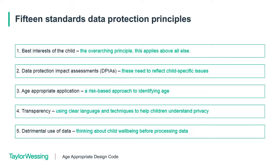Transparency is always the core GDPR fundamental value and sits as our fourth standard. The takeaways are that clear language and in many cases more visual techniques are essential to help children understand privacy. Even very young children have a right to be informed about how their information will be used. Sometimes it's important to flag up the use of data to parents, but actually in many cases it's the children themselves who make some determination as to how their information is used. The fifth standard is really against the detrimental use of data, thinking about the well-being of child data subjects before processing that data.